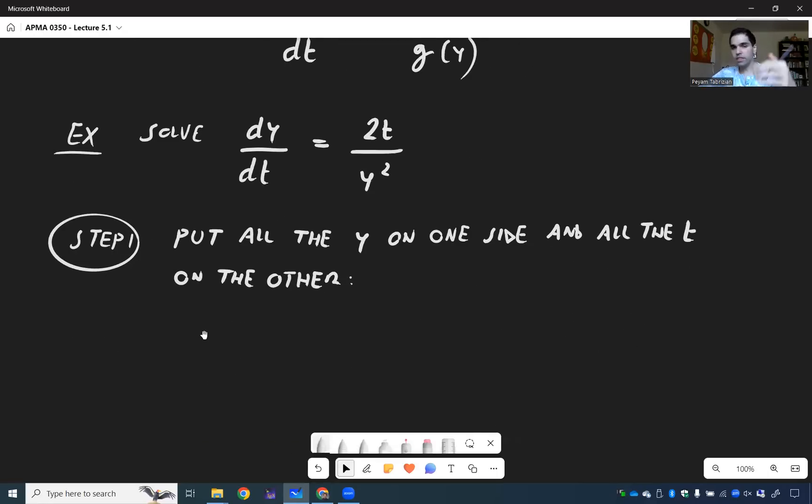So let's do this. In this case we want to put all the t on one side. Sorry, I want to say put all the y on one side, so let's put the y squared on the left hand side. So then we get y squared dy/dt equals 2t.